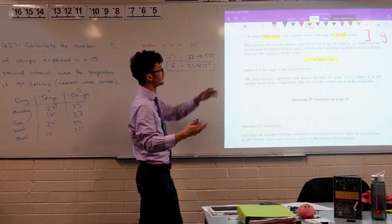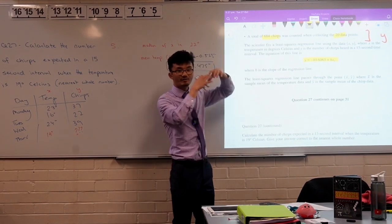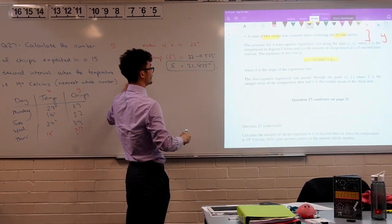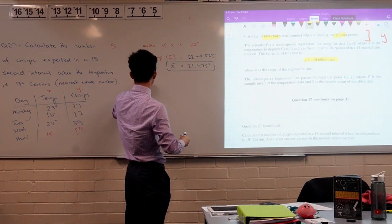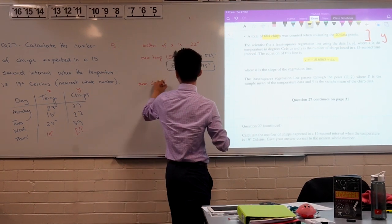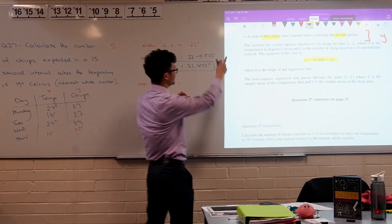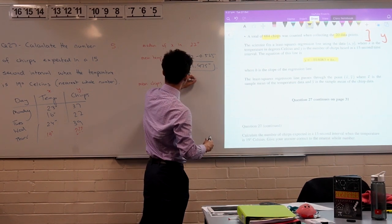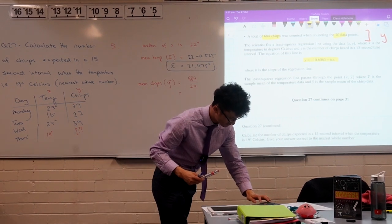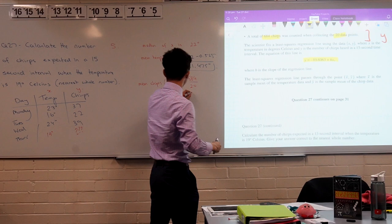Well, think about how do you calculate averages? If you have a total, you divide by how many things there are, or in this case, data points. So y bar, this is going to be the mean chirps. That sounds so ridiculous. Mean chirps, y bar. That's going to be 684 all divided by 20. All right, so let's go ahead and calculate that. So that's 34.2.